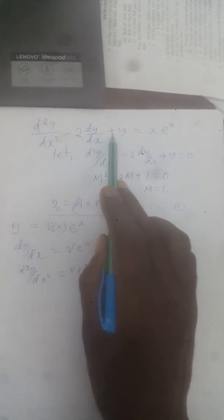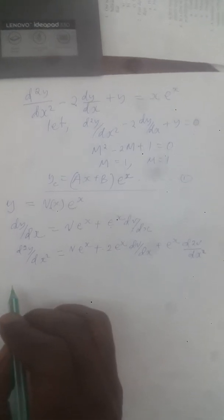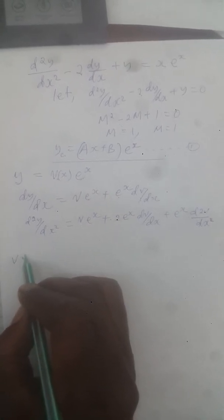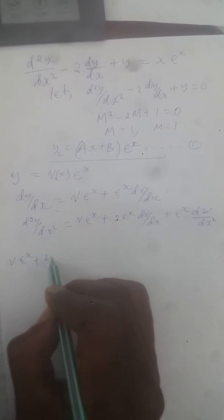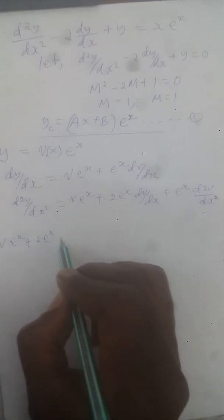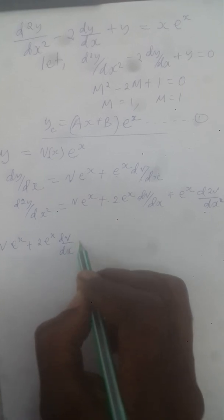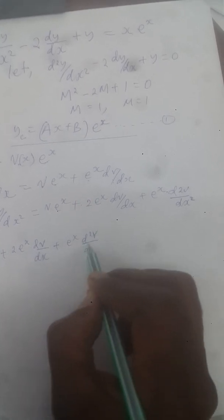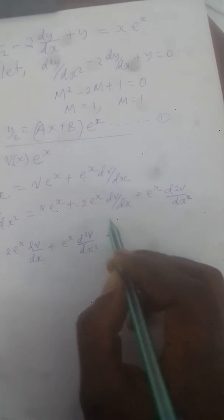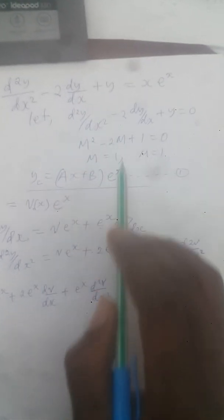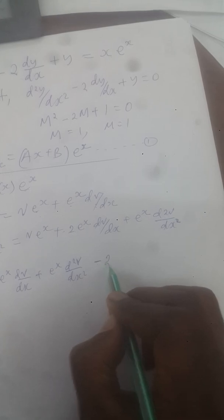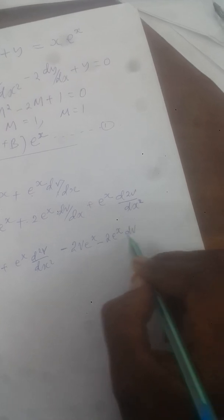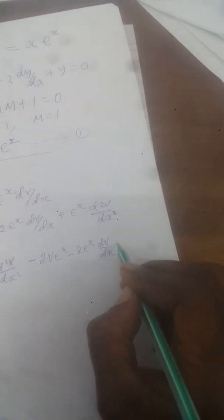Substituting y, dy/dx, and d²y/dx² into the original differential equation, we get: ve^x + 2e^x·dv/dx + e^x·d²v/dx² - 2(ve^x + e^x·dv/dx) + ve^x = xe^x.